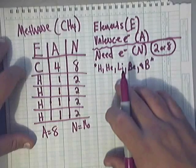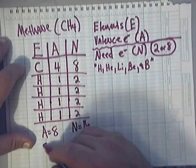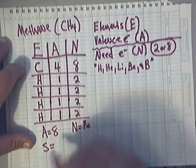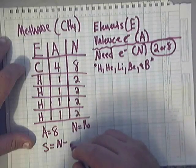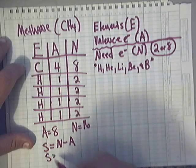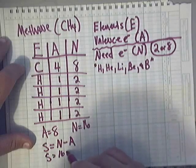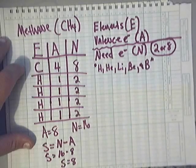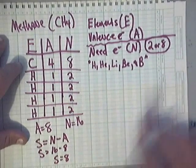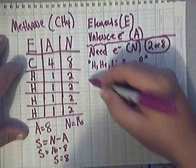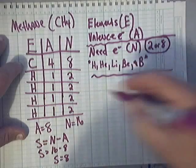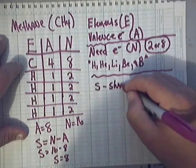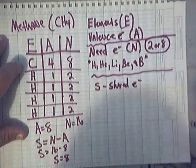Now, the next calculation that we're going to do is S. S will represent the number shared. S is obtained by taking the N and subtracting A. So basically, S equals 16 minus 8, which is 8. Now that's the number of shared. This is shared electrons. So basically, you want to make a little note over here so you can keep track of what this is. S represents the shared electrons.